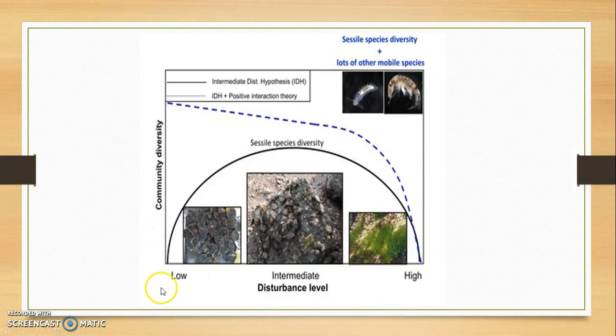This chart is also related to the disturbance frequency. This is the low and this is the high. This is the societal species diversity. This is the intermediate level. So you can say that at intermediate intensity of disturbance, maximum species richness will be there.